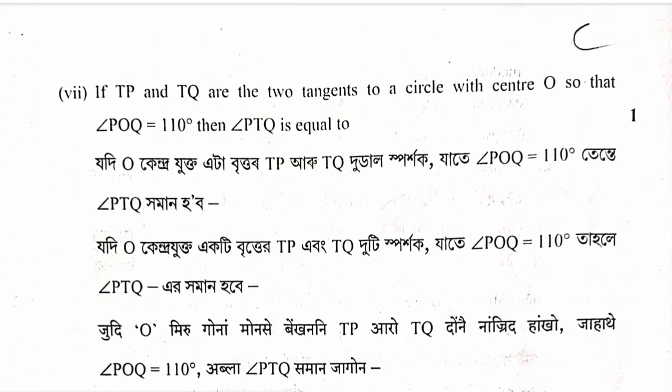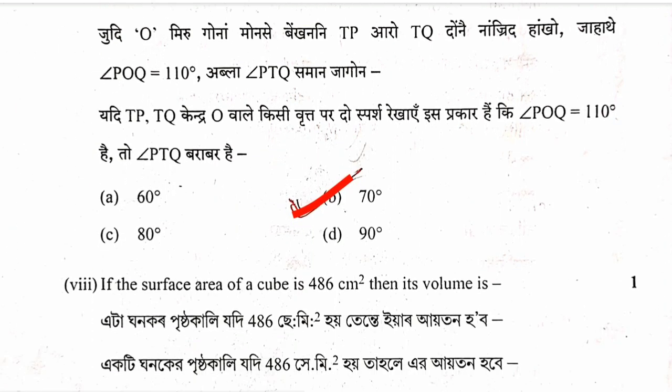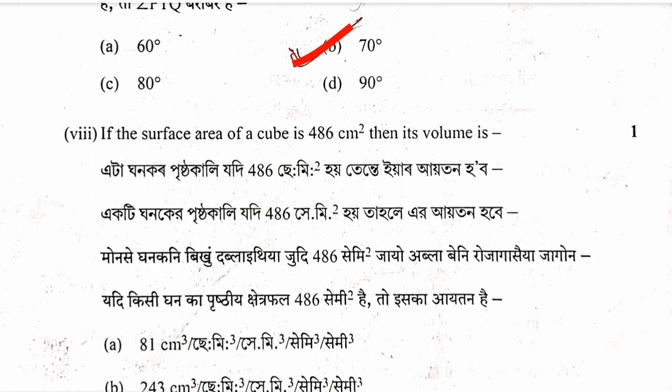Question 8: If TP and TQ are two tangents to a circle with centre O such that angle POQ equals 110 degrees, then angle PTQ equals 180 minus 110 equals 70 degrees. Option B is correct.